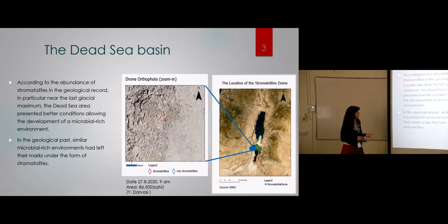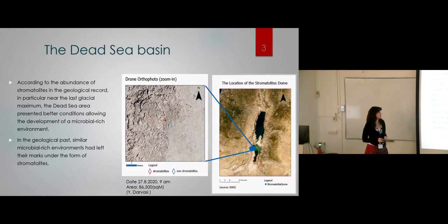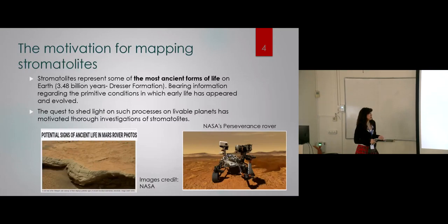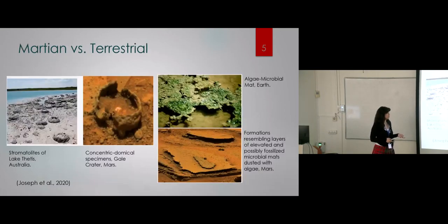According to the abundance of stromatolites in the geological record, the Dead Sea ancient shorelines had much better conditions for them to flourish in the past. The fascination or interest around stromatolites is basically trying to see and understand if we can trace ancient life forms. The main interest now is when looking for ancient life forms on extraterrestrial planets, we're looking for something that might look like stromatolites.